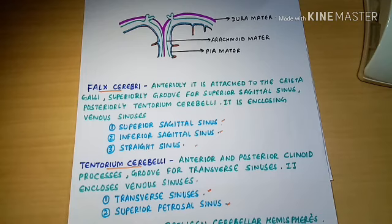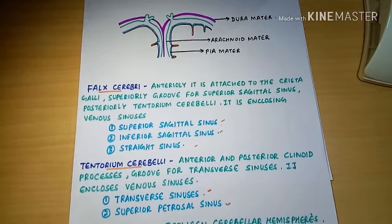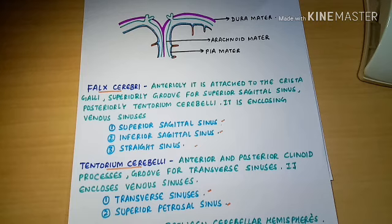The next type of dural separation is the falx cerebelli, which divides the two cerebellar hemispheres and contains the occipital sinus. The occipital sinus is thus a part of the falx cerebelli, which separates the two cerebellar hemispheres present in the cerebellum.